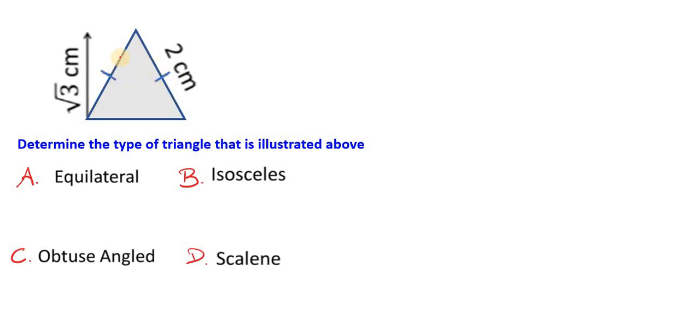So that implies that these two sides are the same length. If that is the case then option D must be out. Why is that? Because option D is scalene and scalene means the three sides are all of different lengths, but we already recognize that two sides are of the same length. So it cannot be a scalene triangle. Scalene triangle means all three sides are of different lengths. No two sides are of the same length.